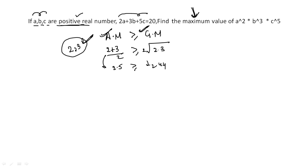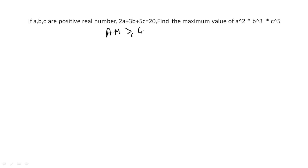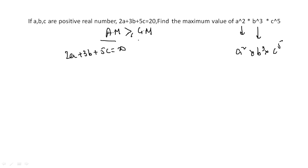Whenever you have this kind of question where abc are positive and they ask for maxima or minima, it's the AM-GM concept. Now let's apply it. We need to find the maximum value of a² × b³ × c⁵. The key thing to remember is that AM ≥ GM, and equality holds when all the values are equal. We have 2a + 3b + 5c = 20, and we need elements to match on both sides.